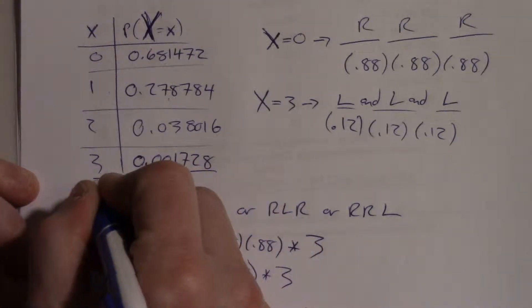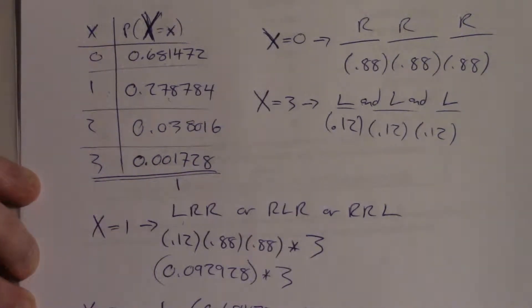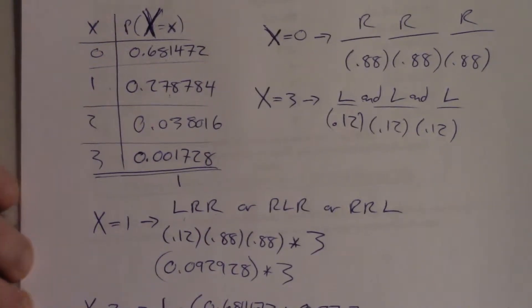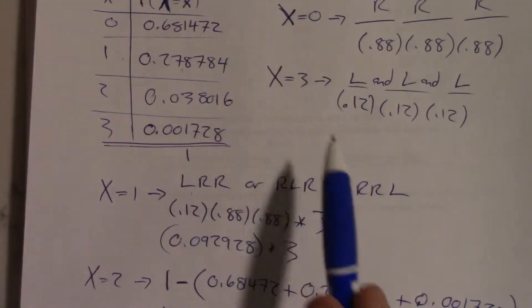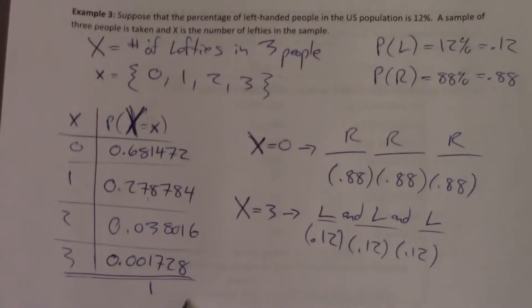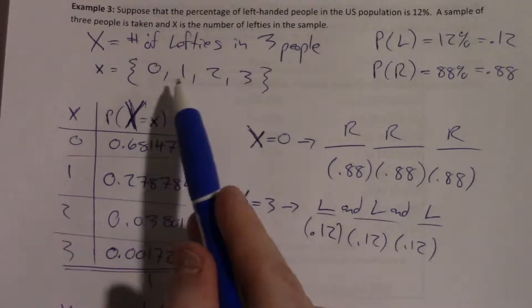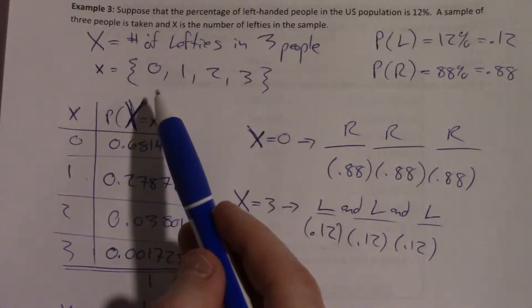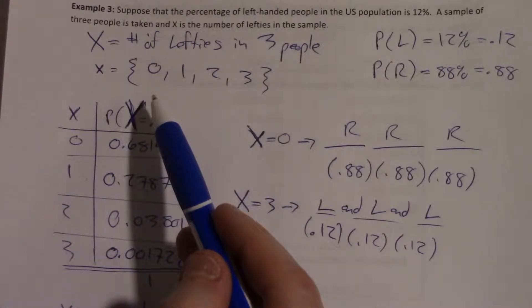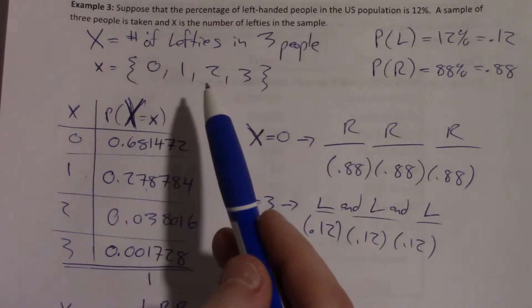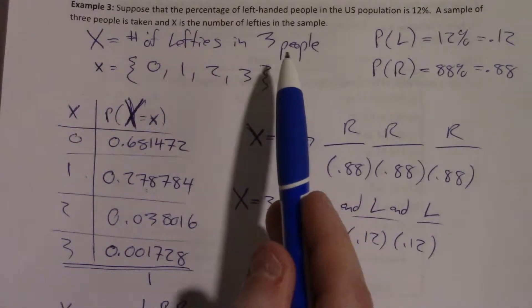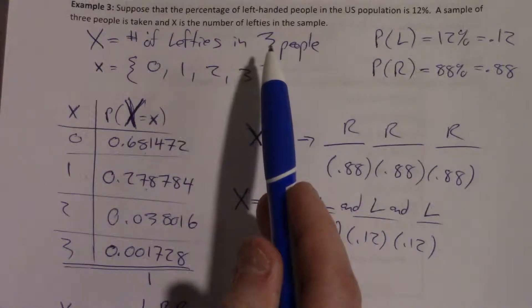And again, all of the probabilities add up to 1, so it's a valid probability distribution. So this is the process basically for this chapter. What we're doing is we're counting something. The number of heads, the number of consonants, the number of left handed people out of some number of trials basically.